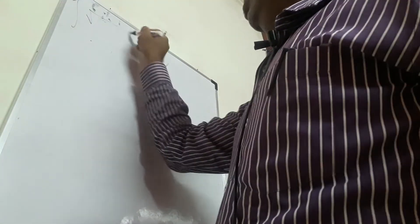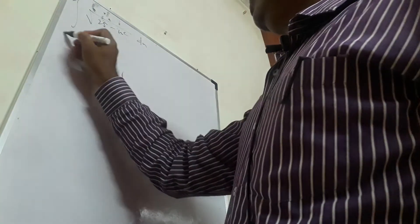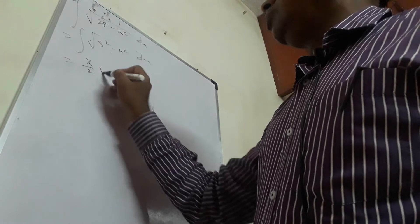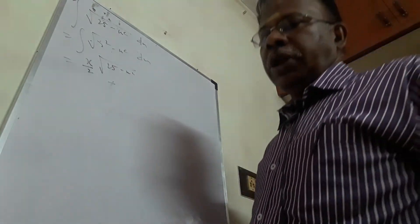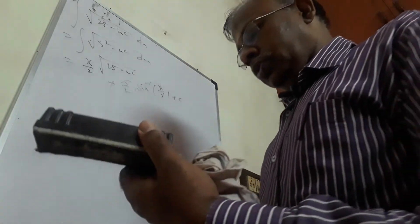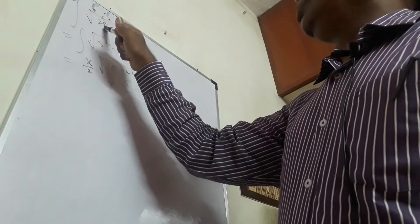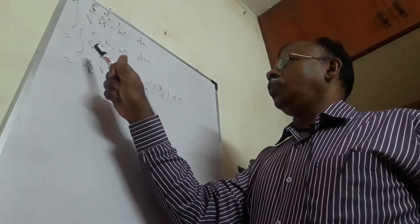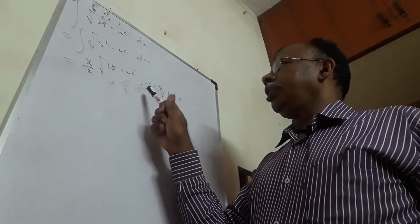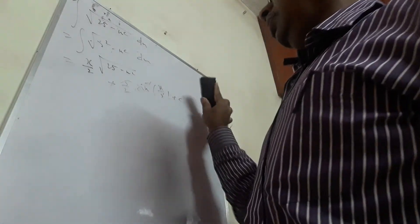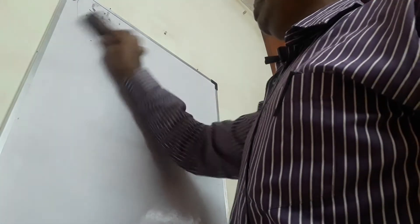Let me just take an example: integral of √(25 − x²) dx. This is √(5² − x²) dx. Applying the formula with a = 5: this gives (x/2)√(25 − x²) + 25/2 · sin⁻¹(x/5) + C. That is the answer. This may be given in your board examination.